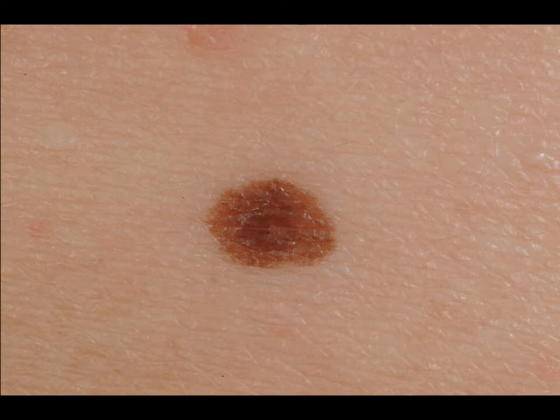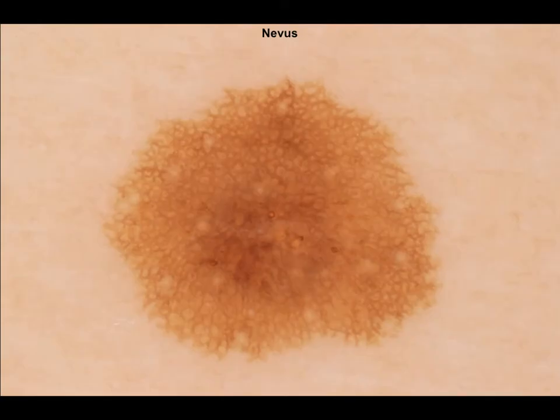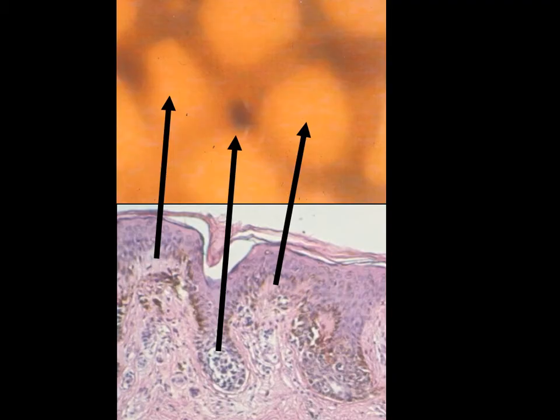This is a junctional nevus clinically. Dermoscopically, we see this regular pigment network consisting of lines and holes, with the holes corresponding to the tips of the dermal papillae. Here you have on one slide the histopathological correlation of a junctional nevus and the high-resolution dermoscopy picture in the upper part. You can see very clearly that the tip of the dermal papillae corresponds to the hole of the pigment network, and there is even a tiny nest which corresponds to a nest of melanocytes. So the tips of the dermal papillae correspond to the holes in the pigment network.